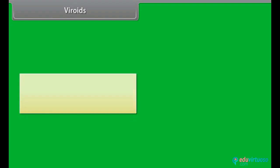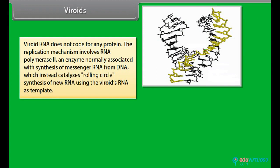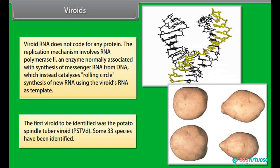Viroids were discovered and given this name by Theodore Otto Diener, a plant pathologist at the Agricultural Research Service in Maryland, in 1971. Viroid RNA does not code for any protein. The replication mechanism involves RNA polymerase II, an enzyme normally associated with synthesis of messenger RNA from DNA, which instead catalyzes rolling circle synthesis of a new RNA using the viroid's RNA as template. The first viroid to be identified was the potato spindle tuber viroid (PSTVd). Some 33 species have been identified.